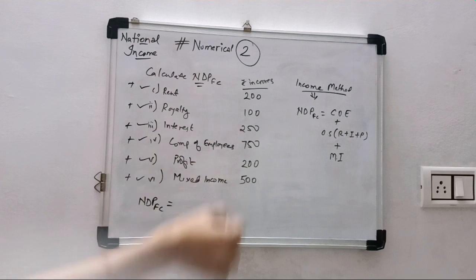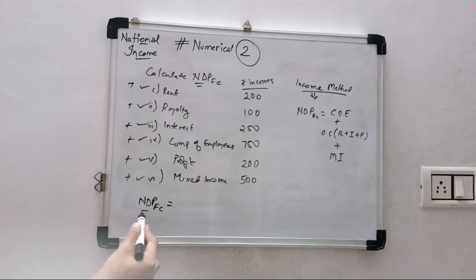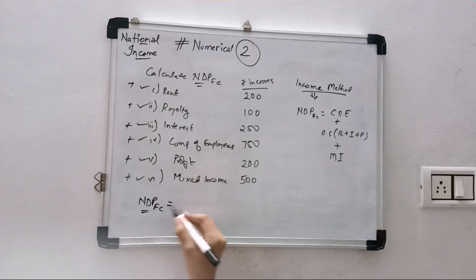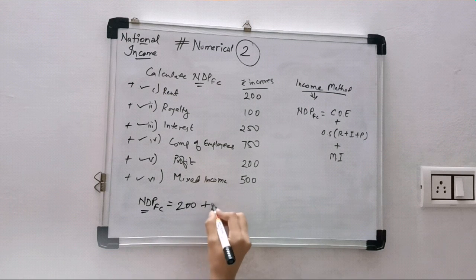Profit will also add and mixed income will add and interest will add. All of these we will total to get NDPFC. So rent is 200, royalty is...